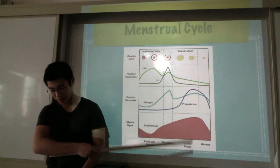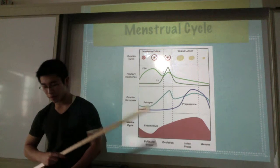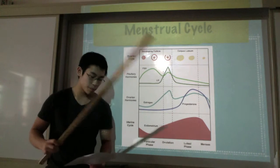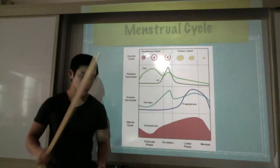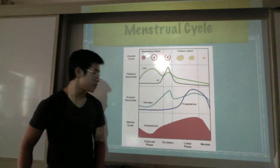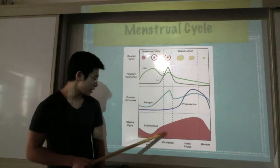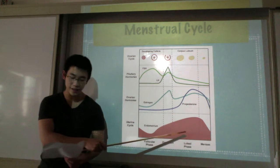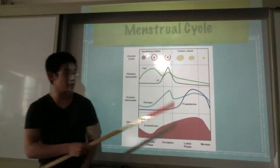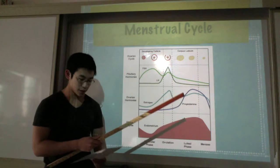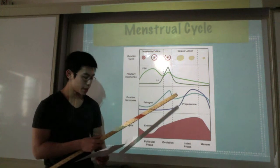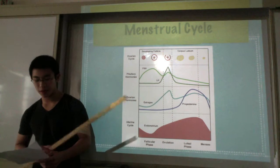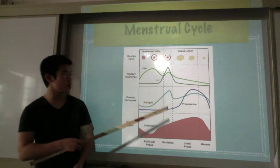And over here is the luteal phase, where a lot of things happen. The corpus luteum secretes progesterone and estrogen. The progesterone that is secreted stimulates development of the endometrium — the endometrium is at its peak here. And estrogen and progesterone inhibit FSH and LH, so there wouldn't be any more follicles growing. And the corpus luteum degrades over time.